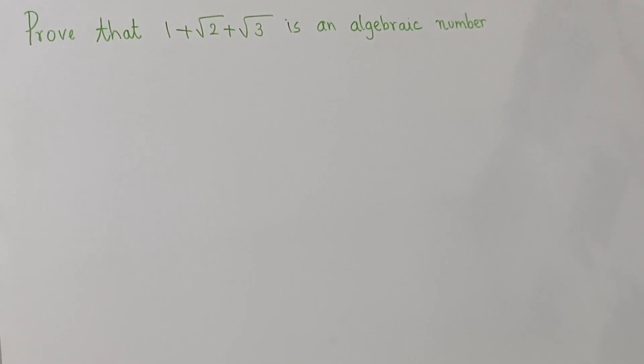Now what is meant by an algebraic number? An algebraic number is a root of a polynomial with rational coefficients. So we have to show that 1 plus square root of 2 plus square root of 3 is a root of a polynomial with rational coefficients.